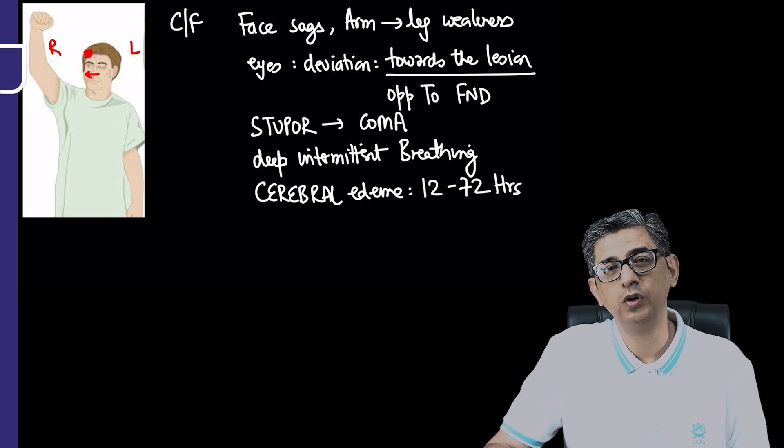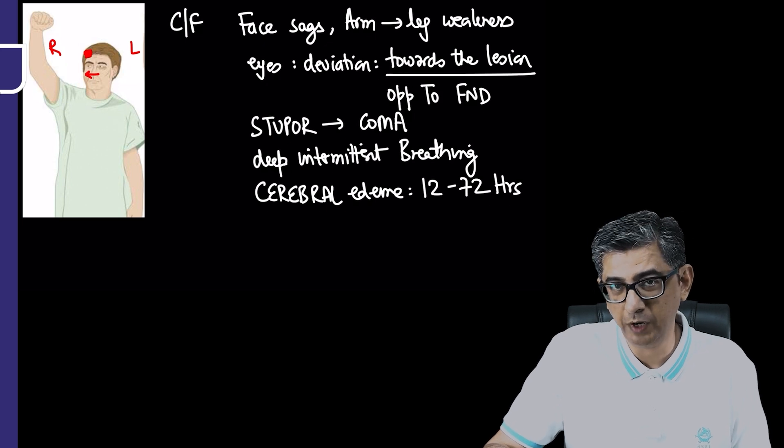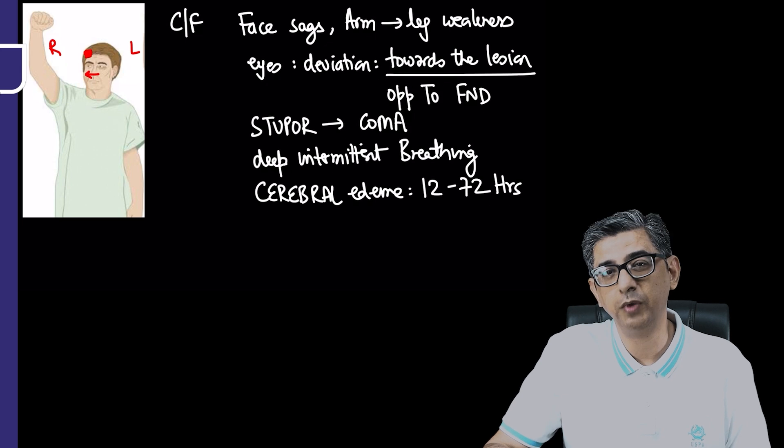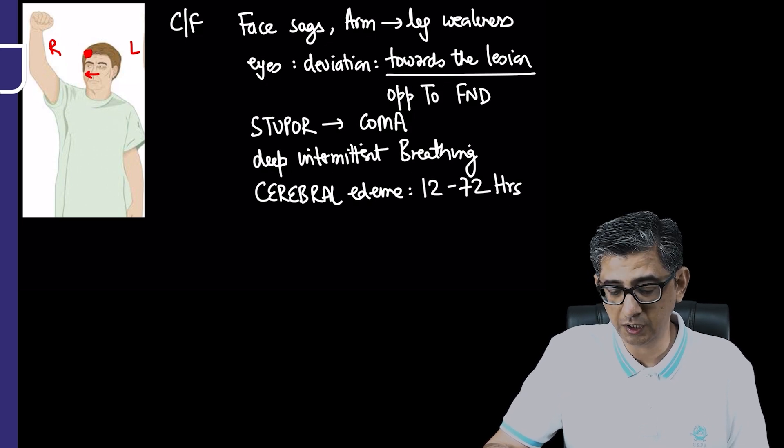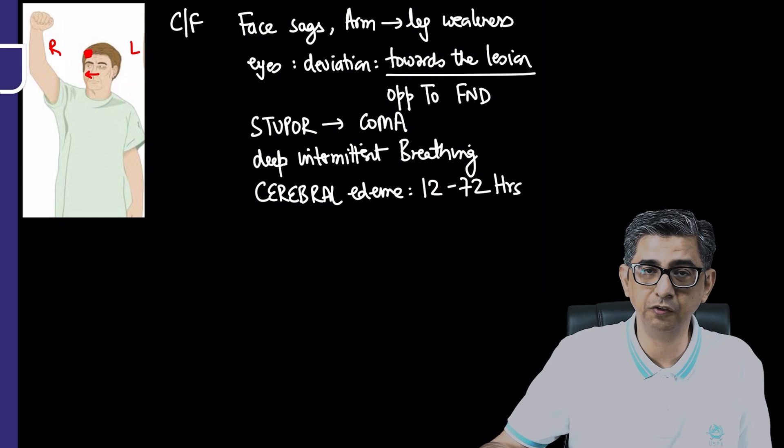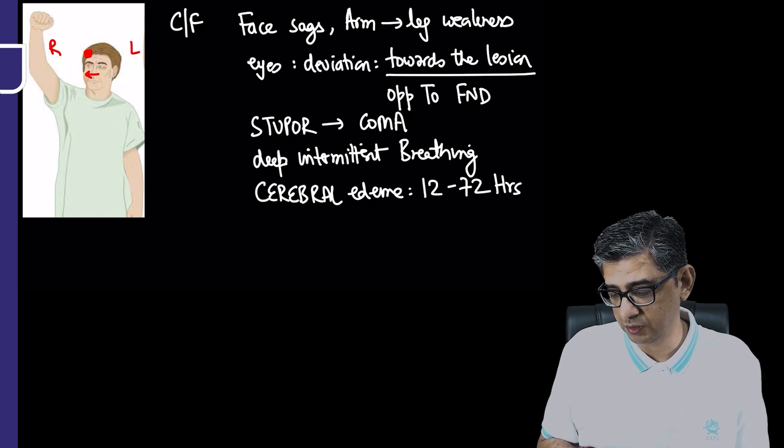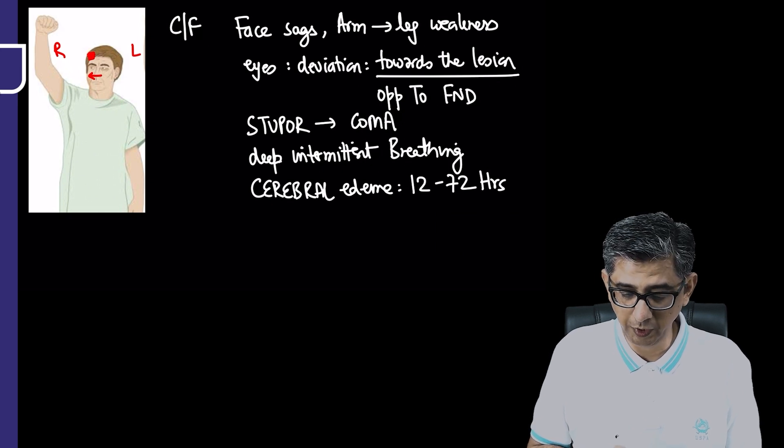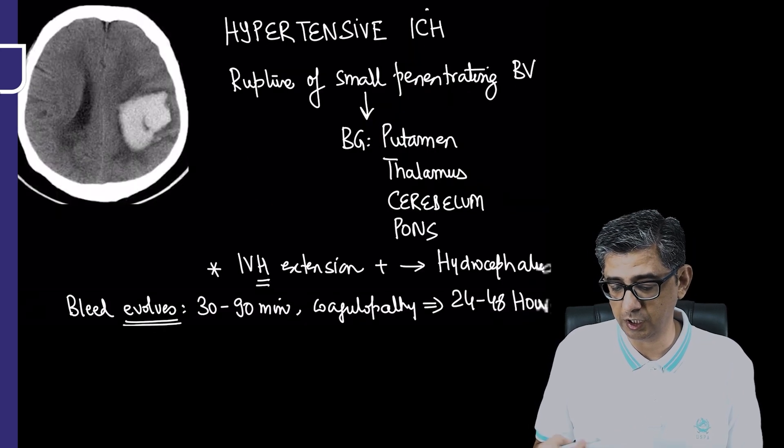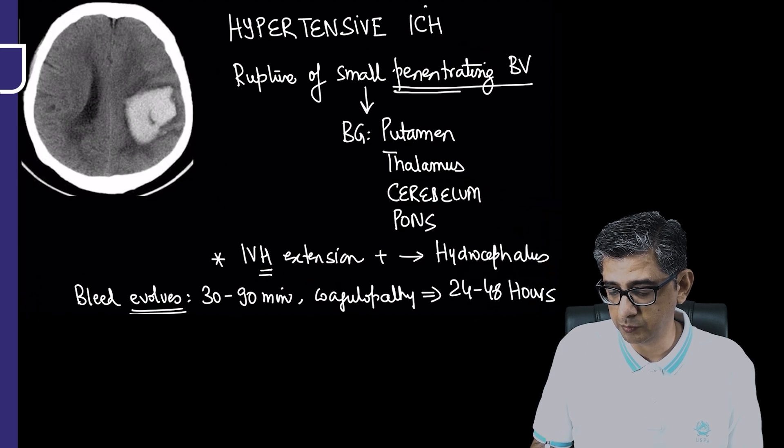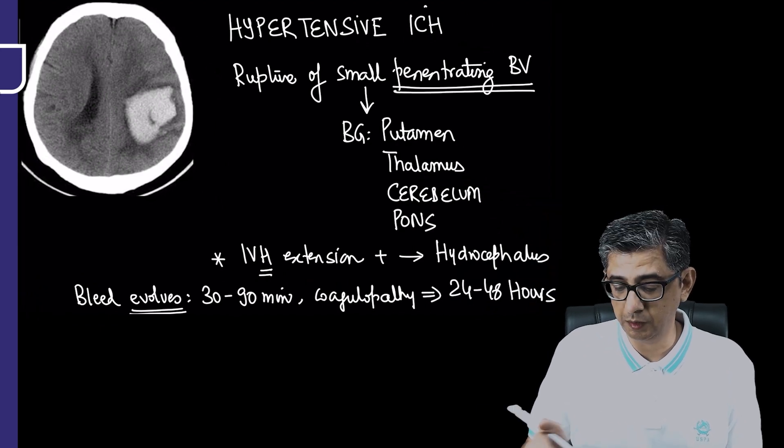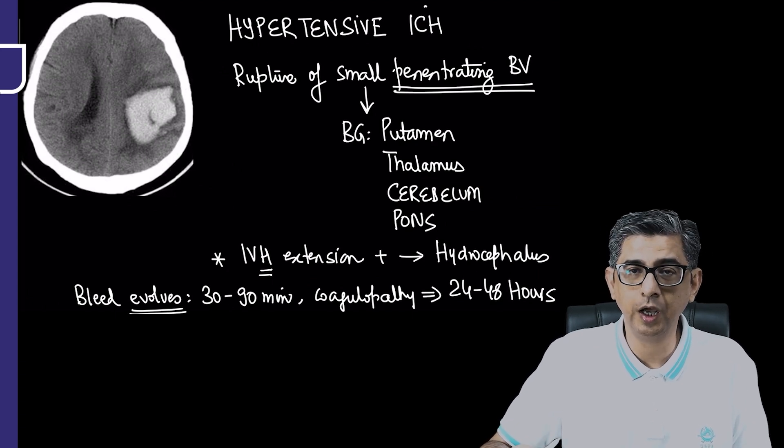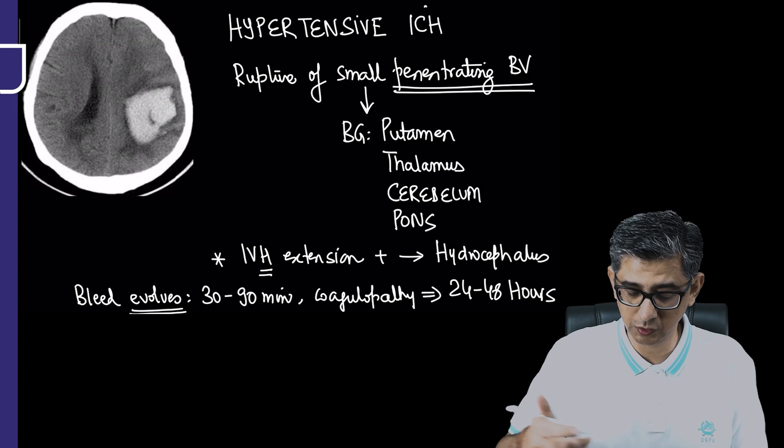CT scan might show evidence of midline shift. The bleed might expand further, confirmed by CT angiography. Because of this fast deterioration, we need to be aware of what's happening. The clinical history can be different because it may not always be involvement of penetrating branches. Smaller branches may involve thalamus or pons.